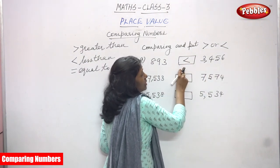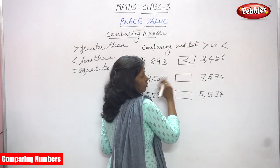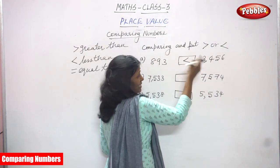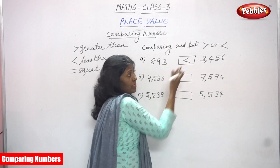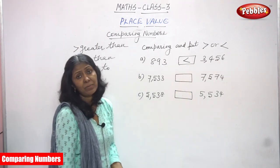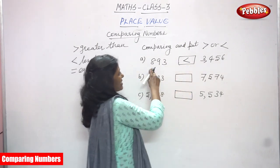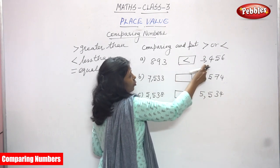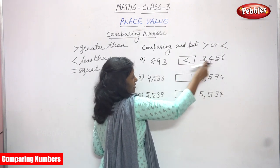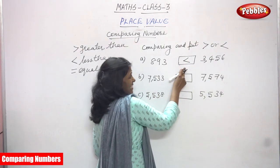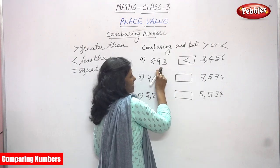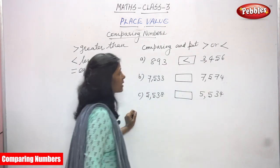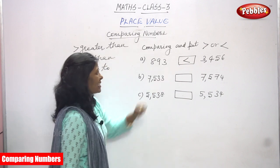This is a narrow mouth symbol. If you compare, 3456 is the greater number because a four-digit number is always greater. So 893 is less than 3456 — this is the right symbol, the less-than symbol.